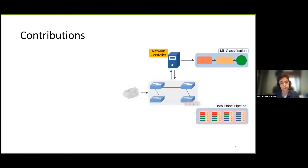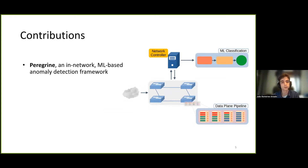Following this introduction, our contributions are, first, the design of Peregrine. Based on the Peregrine Falcon, which is known for its air diving speed, our Peregrine is an in-network machine learning based anomaly detection framework, where a subset of the components in the traditional intrusion detection system are moved to the data plane level.